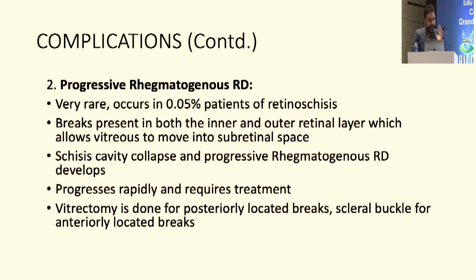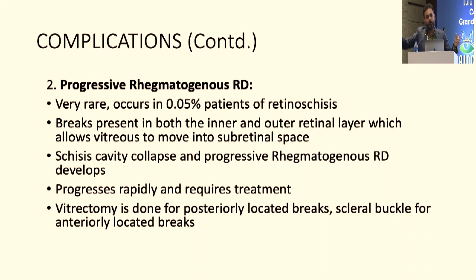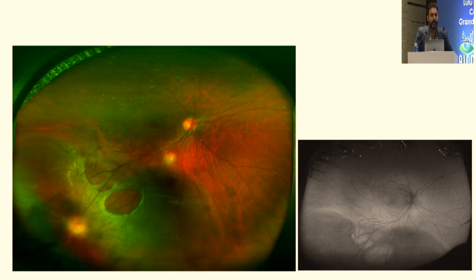Progressive rhegmatogenous RD is very rare — 0.05%. You need the vitreous to get into the retina, into the schisis, and then below the retina. So you need an inner layer break, an outer layer break, and those breaks need to be aligned for fluid to flow through, progressing from a schisis RD into a progressive retinal detachment. I'm going to show four representative cases quickly, one of which will have a video.